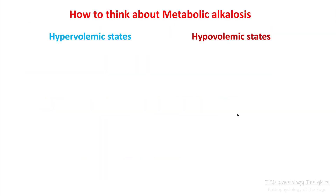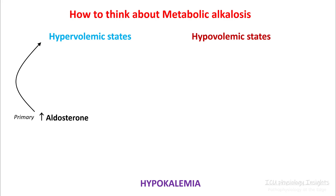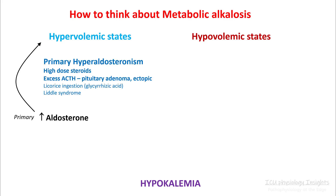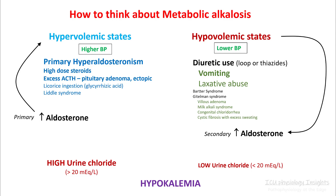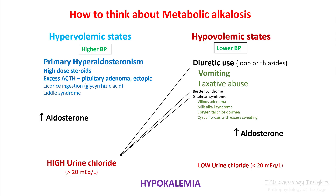When you encounter metabolic alkalosis, always evaluate the patient's volume status. Hypokalemia is common to both conditions. In a hypervolemic state, this is primarily driven by a primary increase in aldosterone, which is seen in primary hyperaldosteronism, corticosteroids, or excessive ACTH either from a pituitary adenoma or ectopic production. A hypovolemic state stimulates aldosterone production secondarily, and this would be seen in patients with diuretic use, vomiting, laxative use, etc. Patients with primary hyperaldosteronism will have higher blood pressure compared to those in whom aldosterone production is secondary. Patients with a hypovolemic state will have low urine chloride, while hypervolemic states will have high urine chloride. Exceptions include diuretic use and Bartter and Gitelman syndrome, in which sodium-potassium-chloride and sodium-chloride channels are affected, resulting in increased chloride loss. We'll discuss some of this physiology in the next lecture.